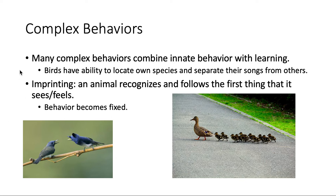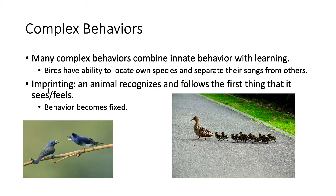If you want to call it a third category, it's really just a combination of innate and learned behaviors — that's called complex behavior. Many complex behaviors combine innate behavior with learning. Birds have the ability to locate their own species and separate their songs from others. Certain songs are going to attract certain birds, so you have to identify and understand what species the bird is and recognize that song — making it complex with both innate and learned elements. If there were just two birds, that would be easier and more of an innate behavior, but in a full ecosystem, other birds exist, making it complex.